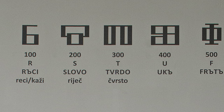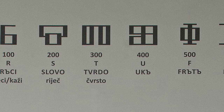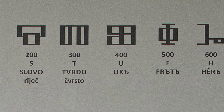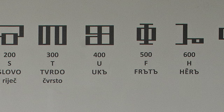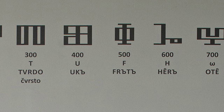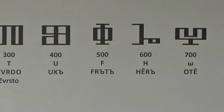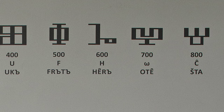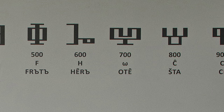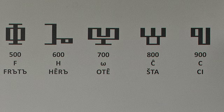A hundred: R — Reci — say. Two hundred: S — Slovo — word. Three hundred: T — Tvrdo — firmly. Four hundred: U — Uk. Five hundred: F — Frt. Six hundred: H — age — year. Seven hundred: O — Ot. Eight hundred: C — Št. Nine hundred: C — Si.